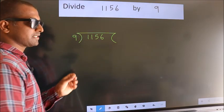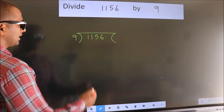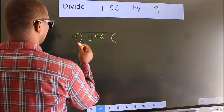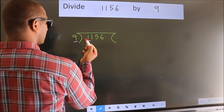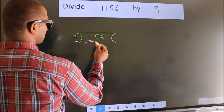This is your step 1. Next, here we have 1. Here 9. 1 smaller than 9, so we should take two numbers: 11.